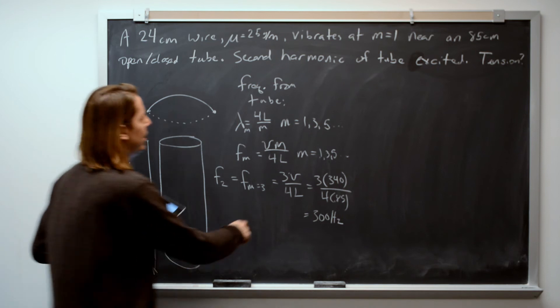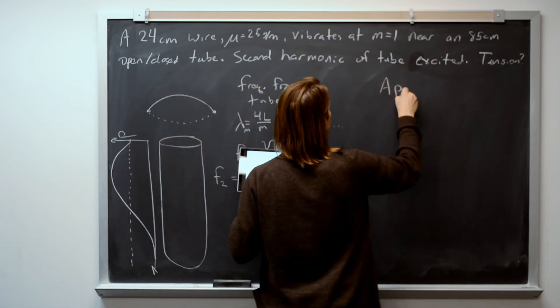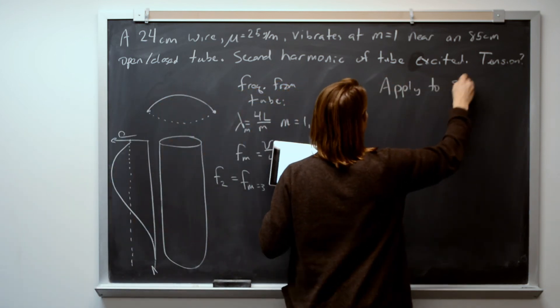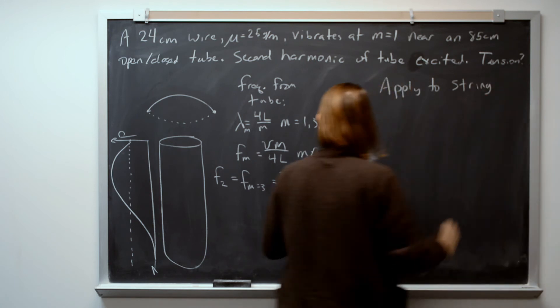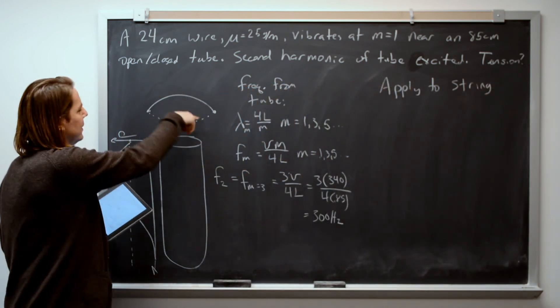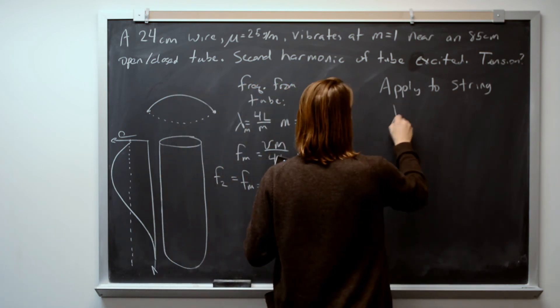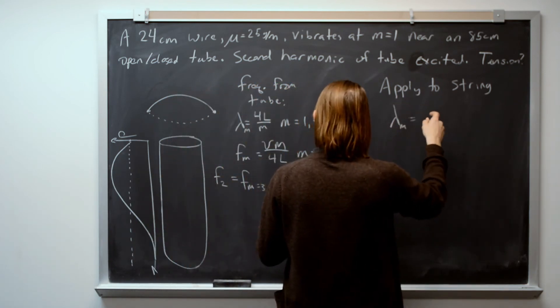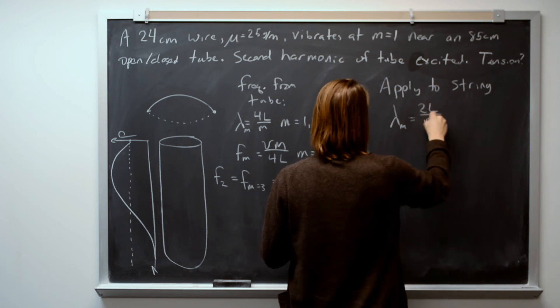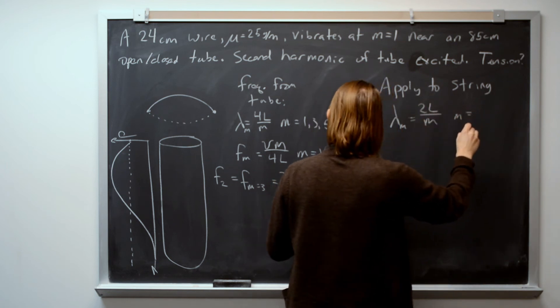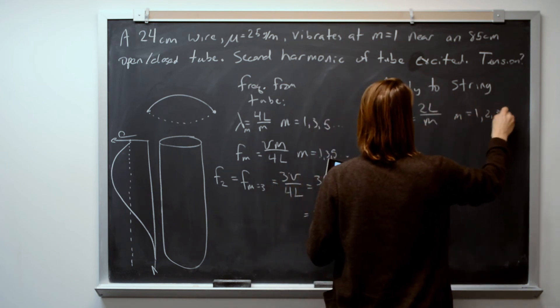So now let's apply this to the string. Well, for the string, it's closed-closed, or it's clamped at both ends. It's basically closed-closed. Lambda M equals 2L over M, where M can equal all the integers, 1, 2, 3, etc.